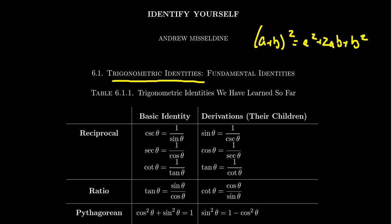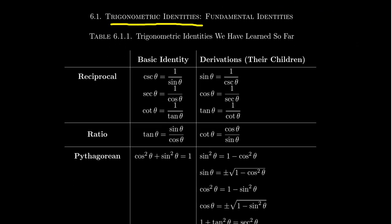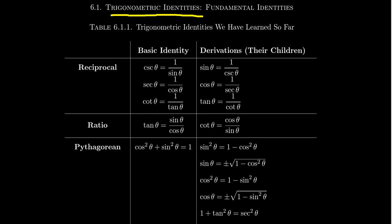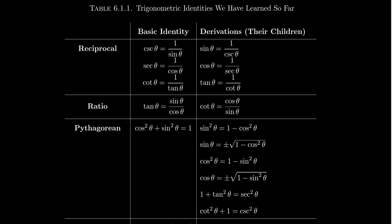Identities are important because they help us recognize when two mathematical expressions are equal to each other. Trigonometric identities focus on identities which we can guarantee that trigonometric expressions are, in fact, equal to each other. In this video I want to review trigonometric identities we've run across previously, and we're going to label these the fundamental or basic identities. Every other trigonometric identity we learn will essentially be derived from these basic identities.